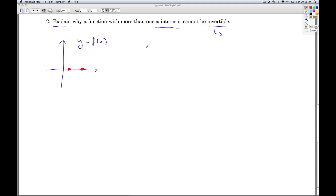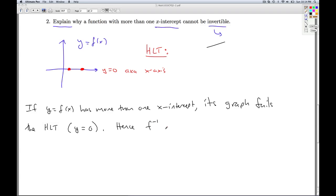Why can't that function be invertible? In other words, why can't that function have an inverse? Well, here's why. If we think geometrically, the main tool we have to detect if a function has an inverse is the horizontal line test. So, if a function has more than one x-intercept, it's going to fail the horizontal line test because the horizontal line, y equals 0, a.k.a. the x-axis, is going to cross the graph more than once. And that's pretty much all there is to this. So, we'd say, if y equals f of x has more than one x-intercept, its graph fails the horizontal line test. Specifically, the horizontal line y equals 0. Hence, f inverse does not exist. And that's all there is for number 2. And that'll do it for checkpoint quiz 5.2.